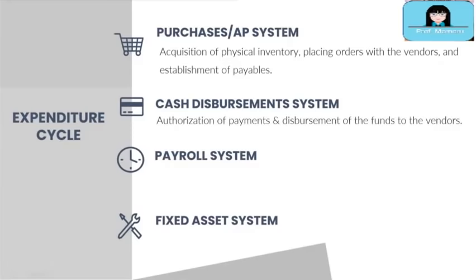Next is the cash disbursement system. This system is behind the authorization of payments and disbursements of funds to vendors. It is the system involved in the processing and approval of checks or electronic fund transfers as payments to suppliers and vendors.